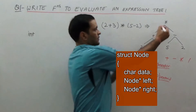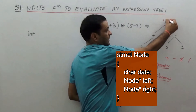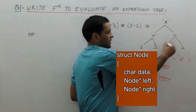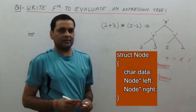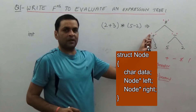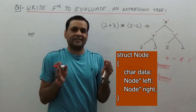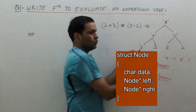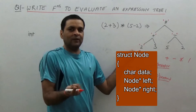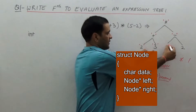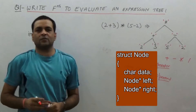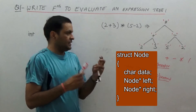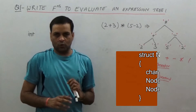For example, in this case the character at the root is star (multiplication). The character at one position is plus, another is minus. The character at 2 is the character '2', whose integer value is actually 50. With this in place, let us jump to the code.